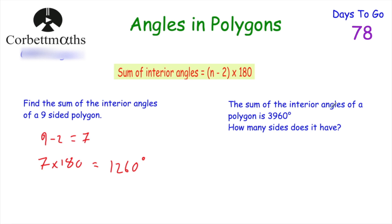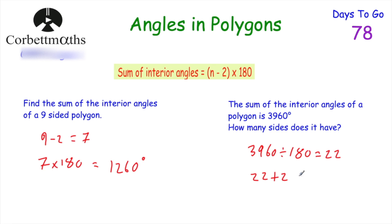This question says: the sum of the interior angles of a polygon is 3960 degrees — find how many sides it has. We just need to work backwards. Normally we take away 2 and multiply by 180, so we reverse that: 3960 ÷ 180 = 22, then 22 + 2 = 24 sides. So a 24-sided polygon has interior angles that add up to 3960 degrees.